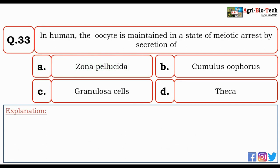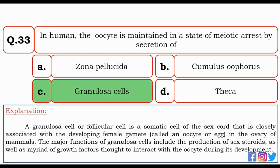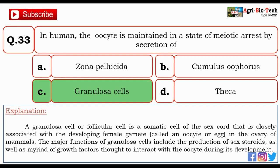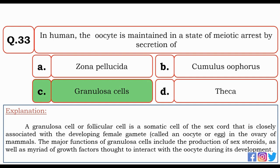Next question: in humans, the ovule site is maintained in a state of meiotic arrest by secretion of — zona pellucida, cumulus oophorus, granulosa cells, or theca? The correct answer is C — granulosa cells. A granulosa cell or follicular cell is a somatic cell of the sex cord closely associated with the developing female gamete in the ovary of mammals. The major function of granulosa cells includes production of sex steroids and growth factors that interact with the oocyte during its development.